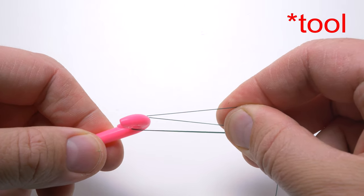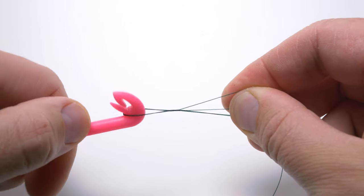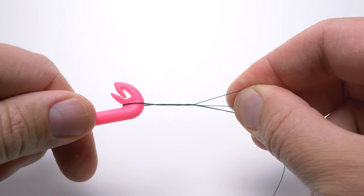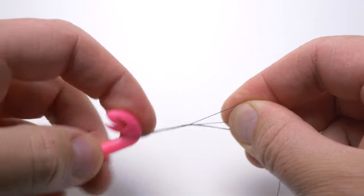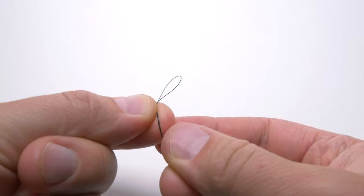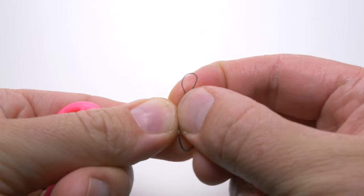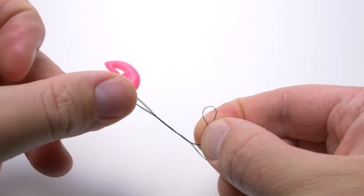Then I will twist the loop twice. Then I will put this small loop into the jaws of the tool and start pulling.